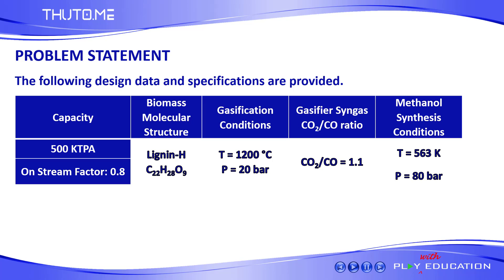Our design problem specifications are given as follows. We are required to design a 500 kilo tons per annum plant capacity with an armstream factor of 0.8, or 80% of the time. In order to simulate biomass, we will be using lignin H, which we are going to represent using this molecule, C22H2806.